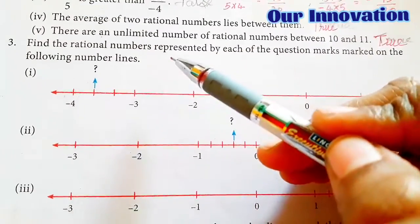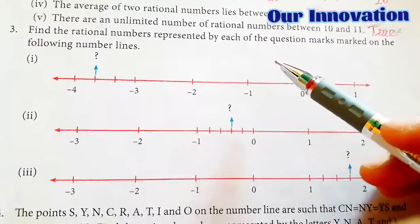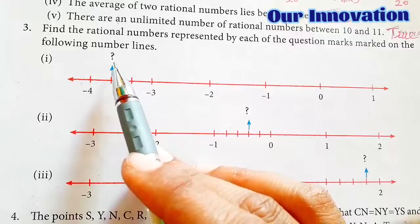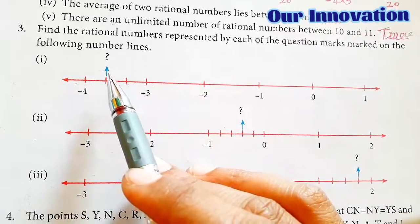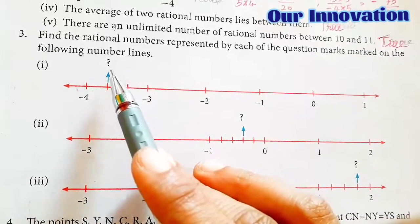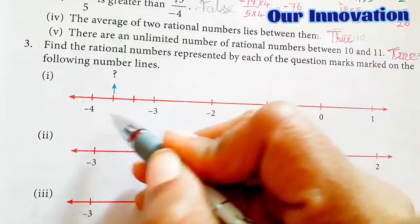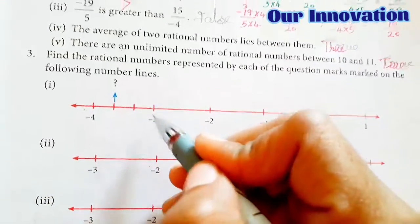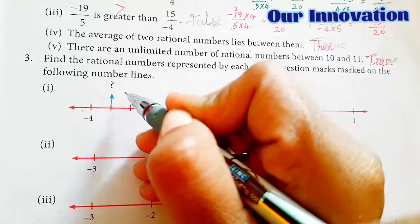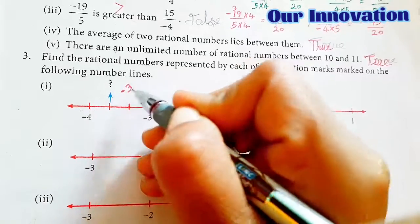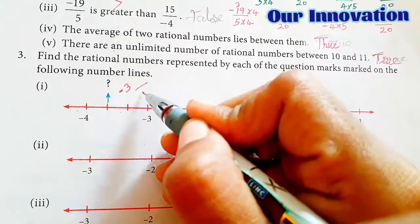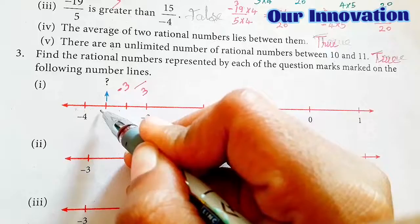Third one: find the rational numbers represented by each of the question marks on the following number line. Looking at the question marks between minus 3 and minus 4 — between these two whole numbers, we divide into 3 parts: 1, 2, 3.